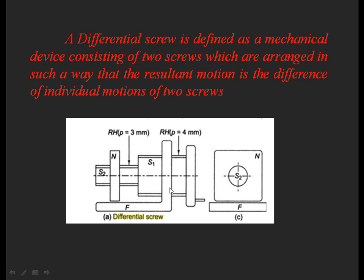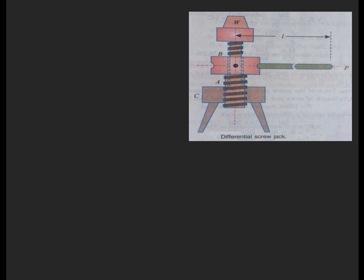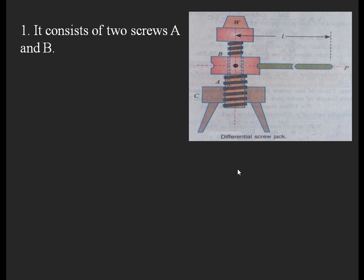By this arrangement we can understand the differential screw mechanism, which gives a small resultant movement using two screws. The differential screw jack consists of screw A and screw B. These two screws produce the differential motion. Generally, the differential motion is given to screw B, and based upon this the lifting and lowering of the load W takes place.